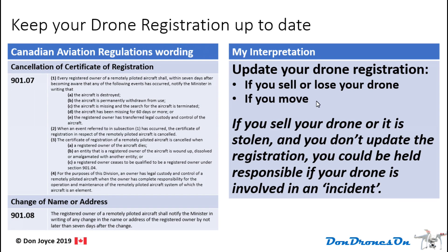You must also keep your drone registration up to date. There are two rules around this: one about cancelling it and one about changing your name or address. You need to update your drone registration if you sell or lose your drone, if it gets stolen, or if you move. If your drone is sold or stolen and you don't update the registration, you could be held responsible if it's involved in one of these Gatwick-like incidents.